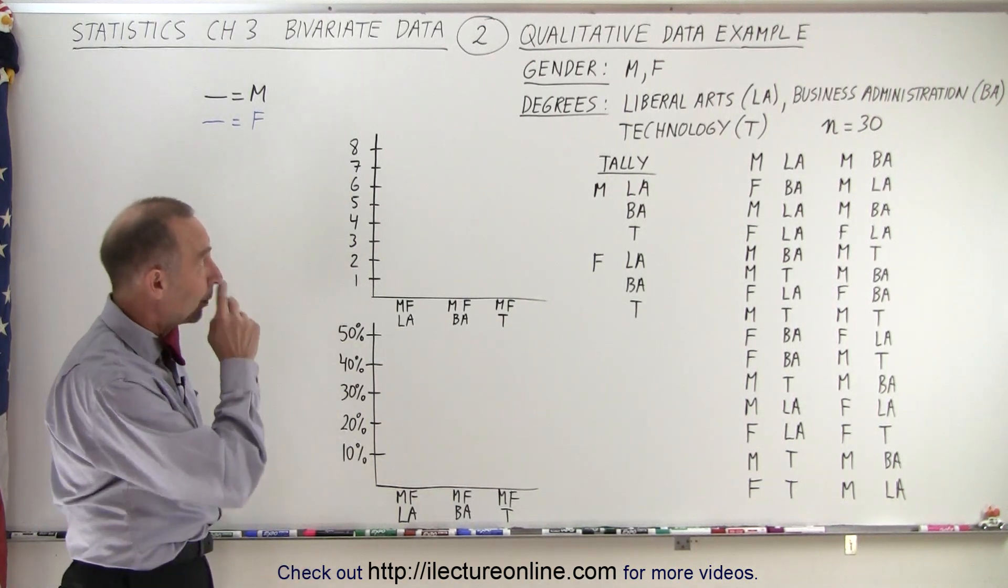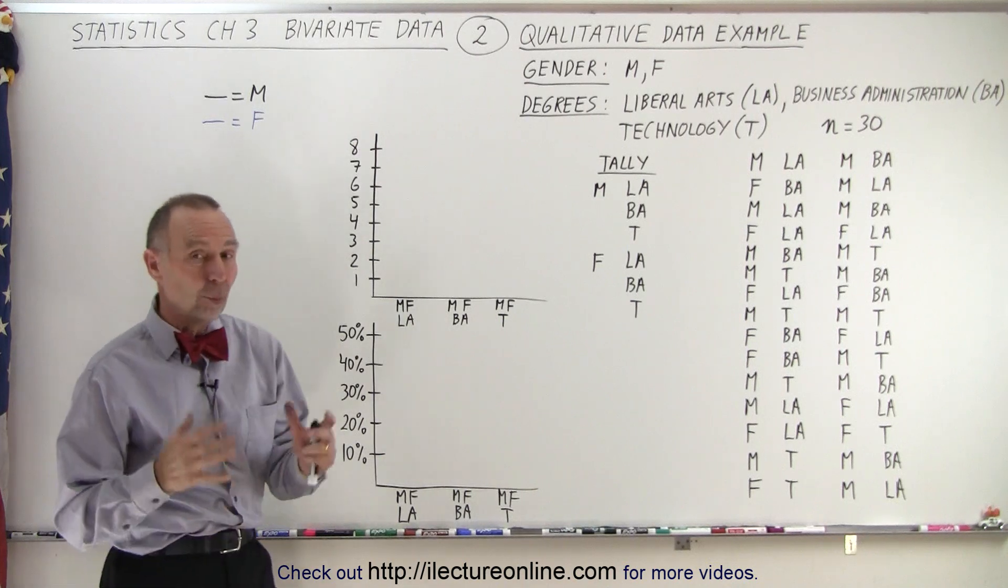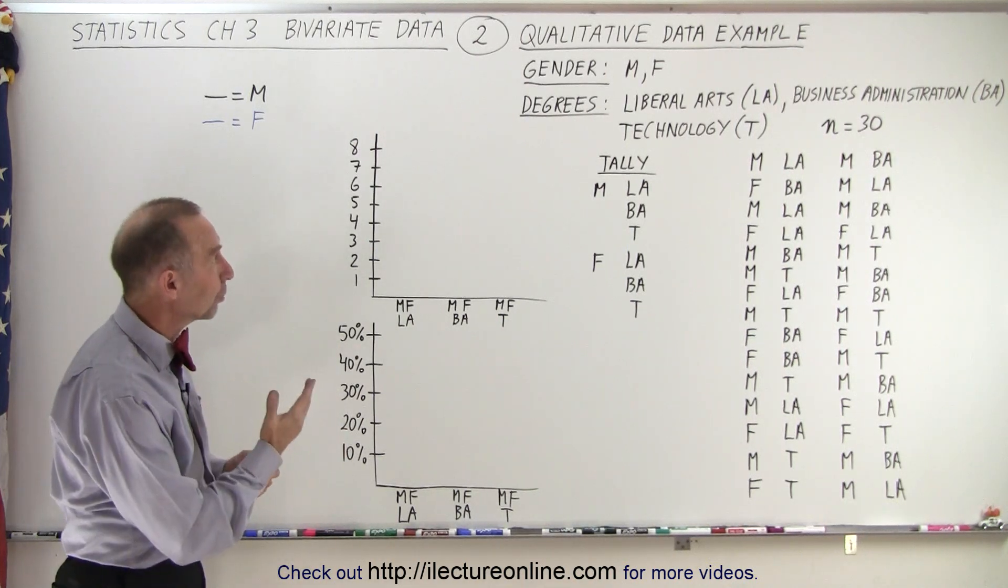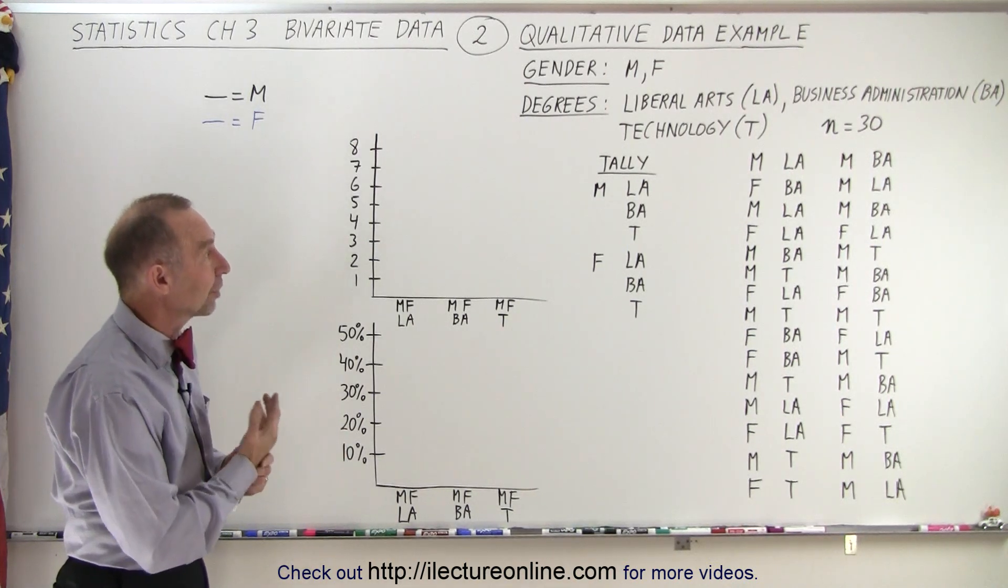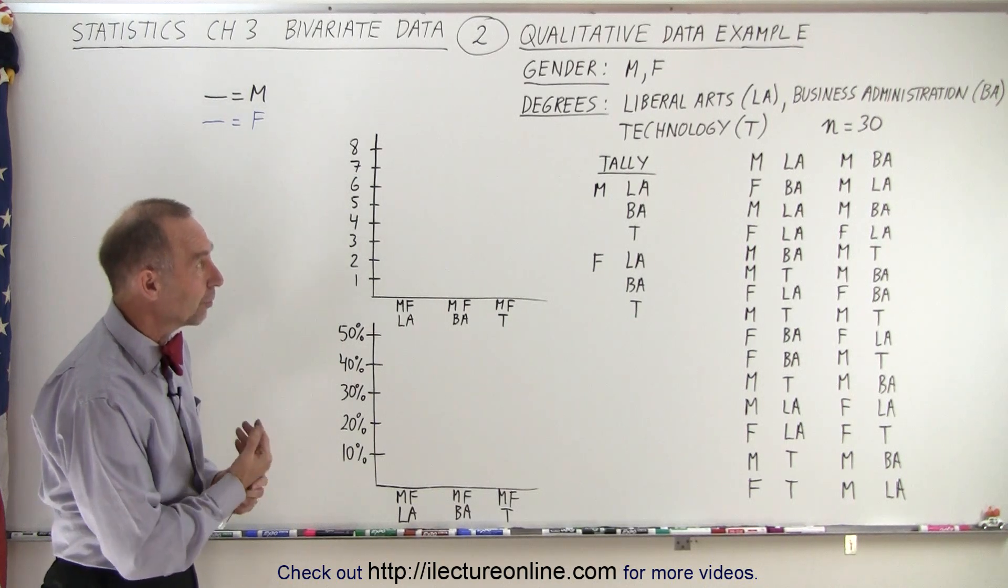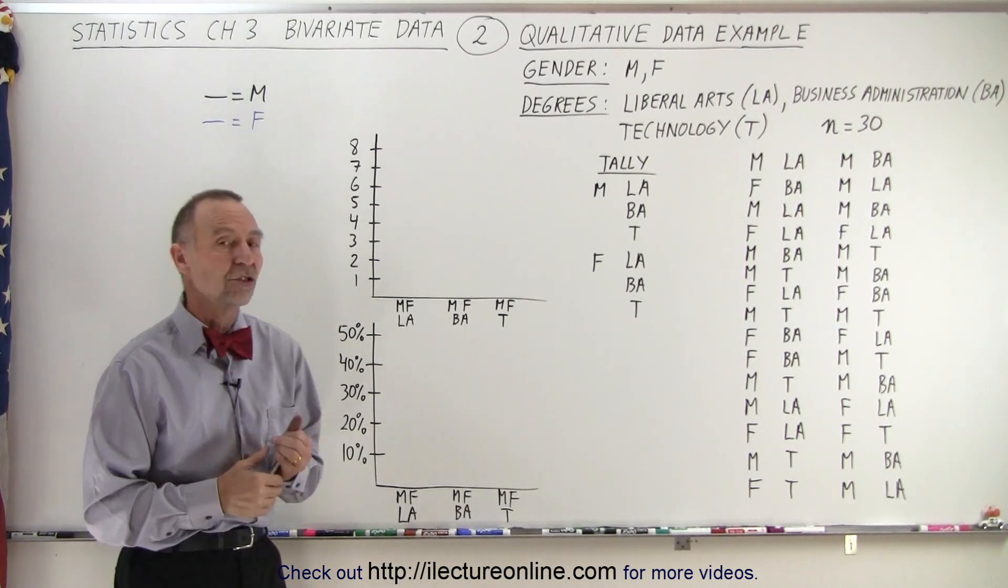For example, we have male and female students. That's one aspect of it. And the next one is the type of degrees they're going to earn: Liberal Arts, Business Administration, or Technology degrees.